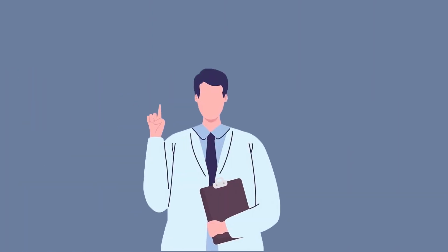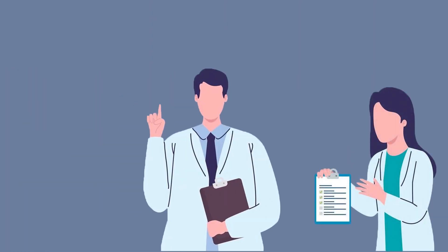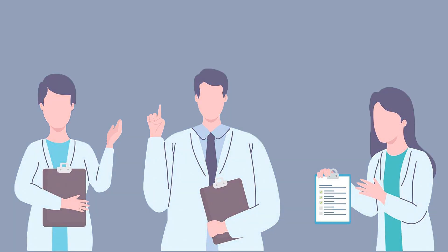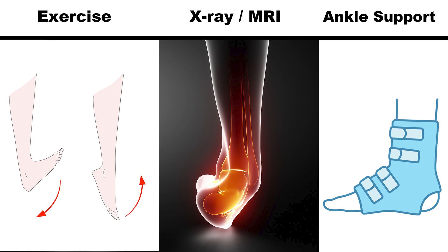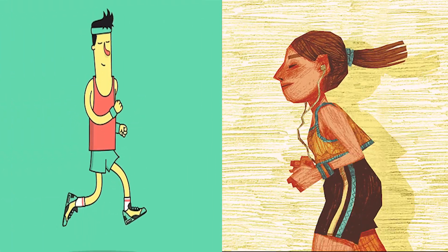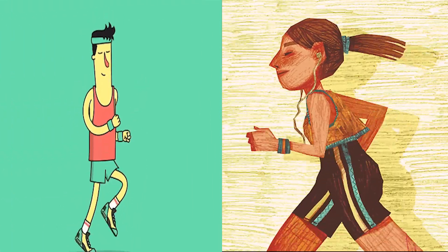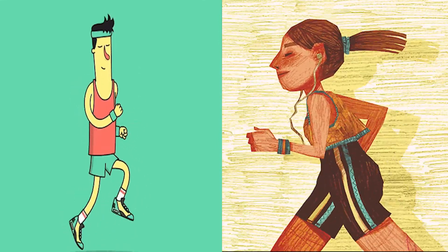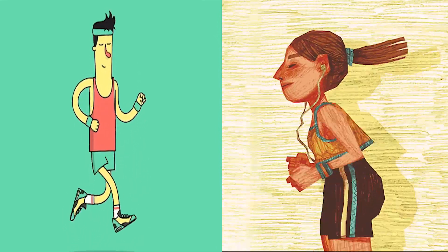Determining the type of sprain and ruling out the possibility of a fracture is the first step in the recovery process. In general, you'll want to control any swelling, use support and protection, and improve range of motion, strength, and especially balance when the time is right. If one of these sprains happens to you, just hold steady and stick to a good rehab plan to get you back on your feet.